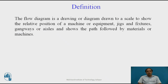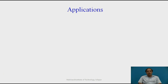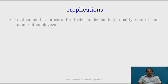The flow diagram is a drawing or diagram drawn to a scale to show the relative position of a machine, equipment, jigs and fixtures, gangways, and aisles. It shows the path followed by the material, machine, or in some cases a person. The flow diagram is a pictorial view of the entire process followed by material, man, machine, equipment and so on.